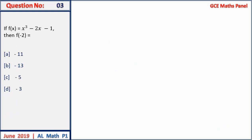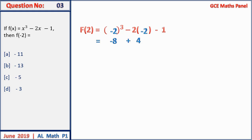Question 3: the value of f(−2). Substituting −2 into the function gives (−2)^3 − 2(−2), which simplifies to −5. Answer C.